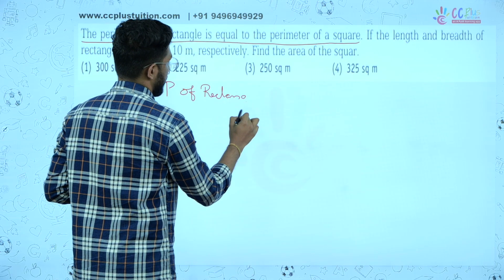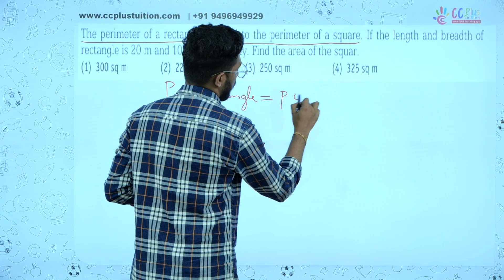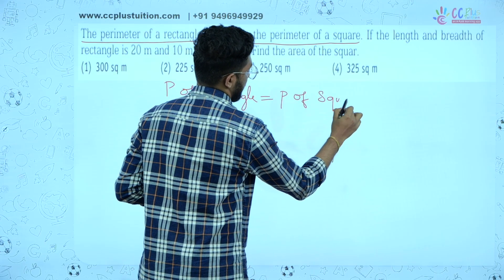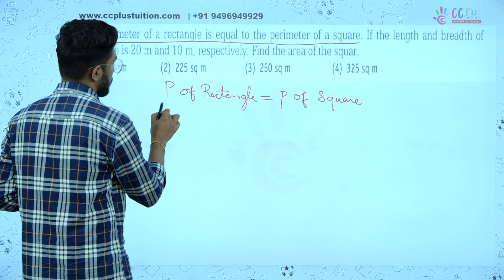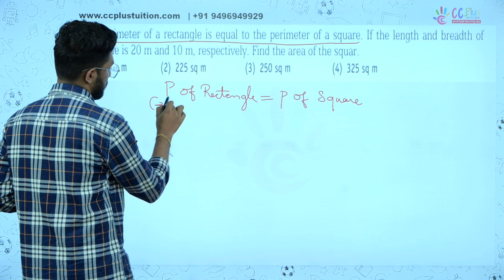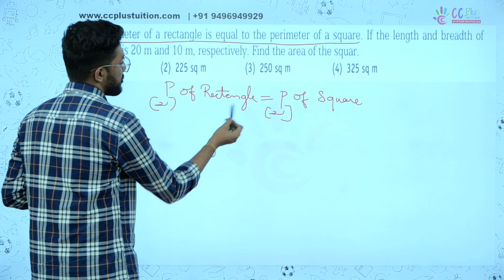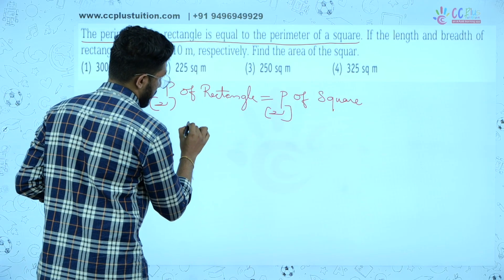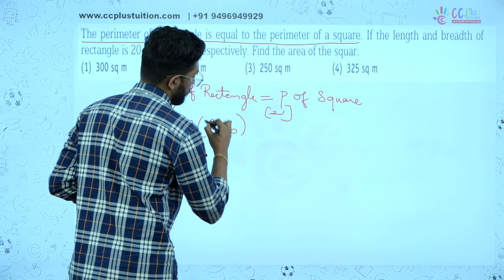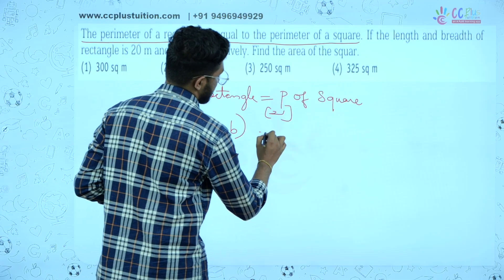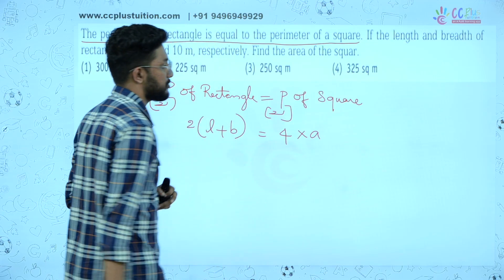P of a rectangle is equal to P of a square. Perimeter of a rectangle equals 2(L + B). Perimeter of a square equals 4 into A.